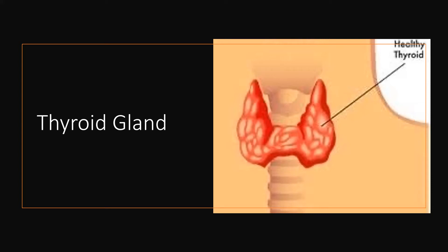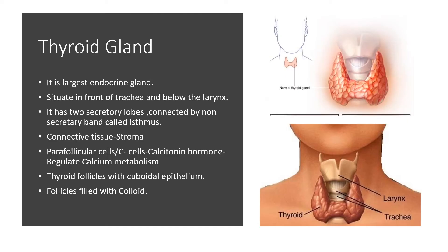Hello everyone. Welcome back to biology class. Today in this video we will study about thyroid gland, parathyroid gland and the thymus gland. Pituitary gland is a master gland which controls other endocrine glands, and thyroid gland is one of the glands which is under the control of pituitary gland.